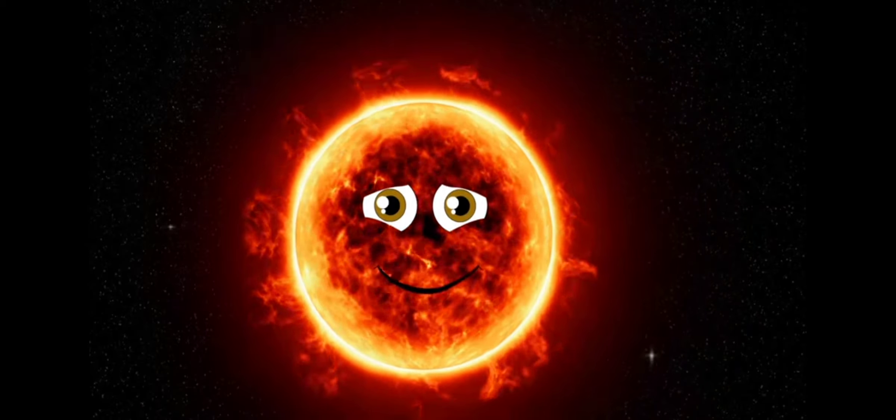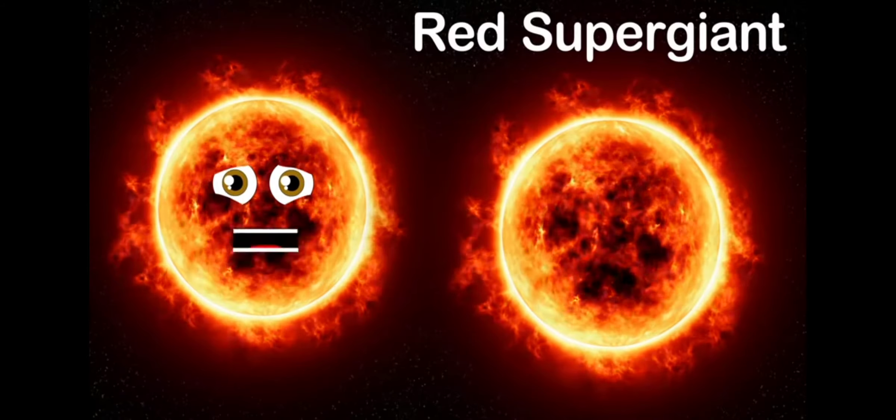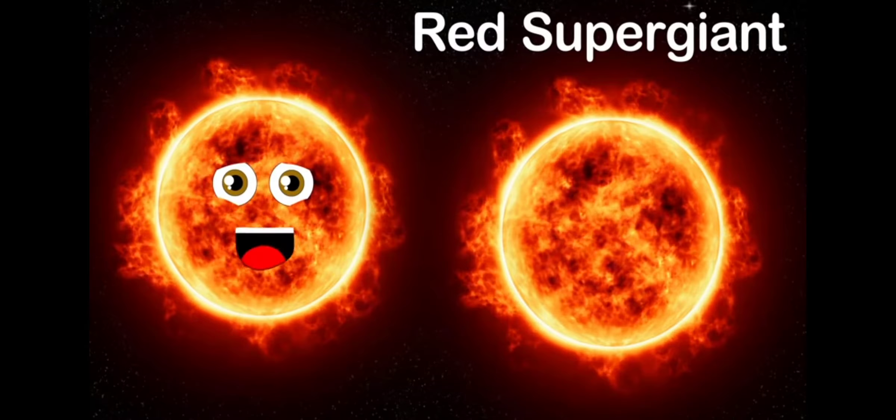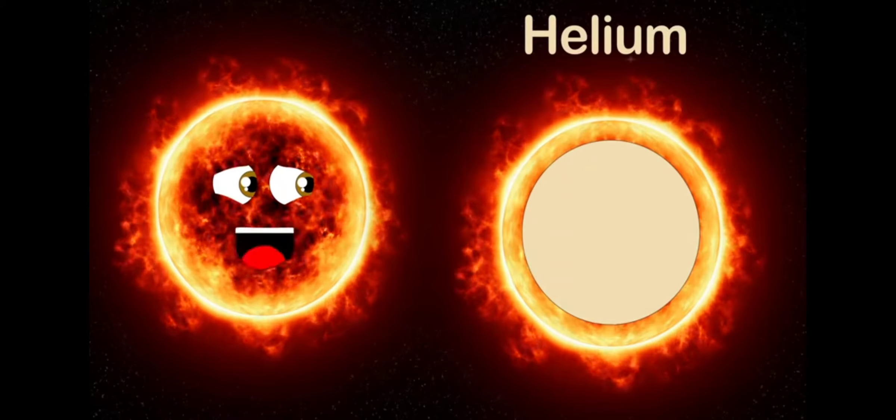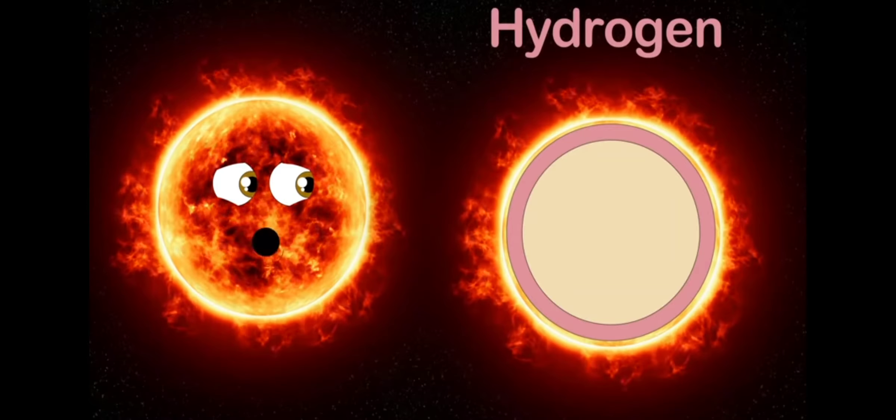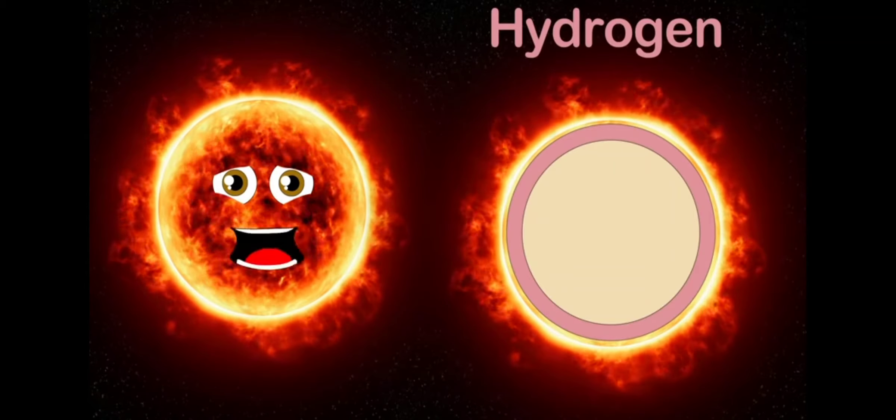A red supergiant is an aging giant star that has consumed its core supply of hydrogen fuel. That's what they are. Helium has accumulated in my core so well and hydrogen's undergoing nuclear fusion in my outer shells.